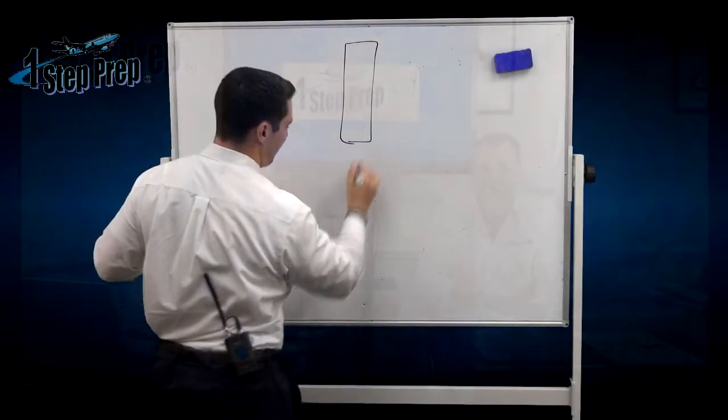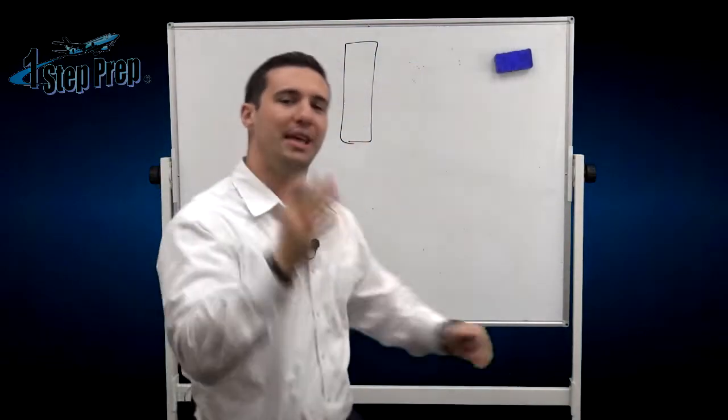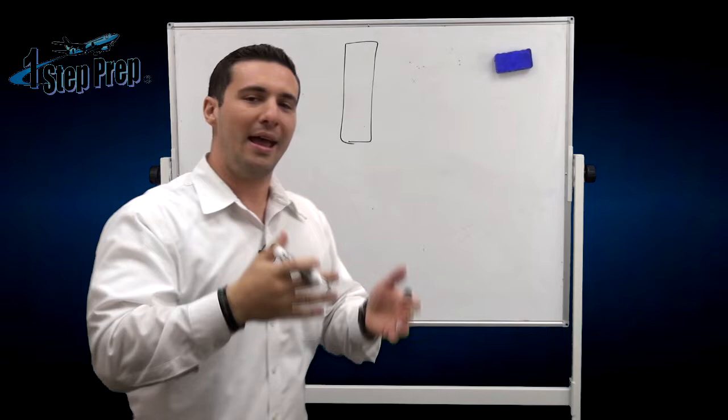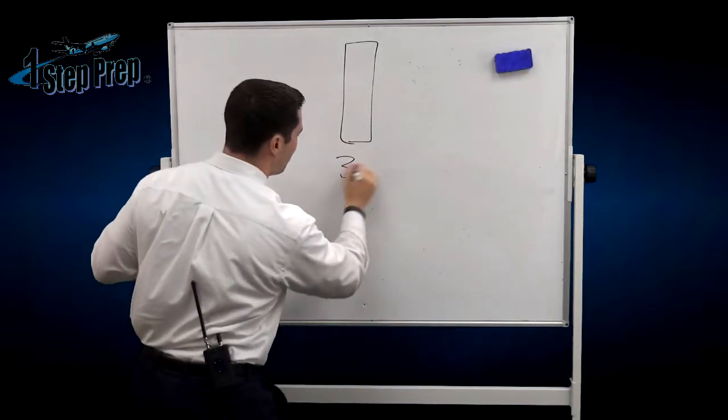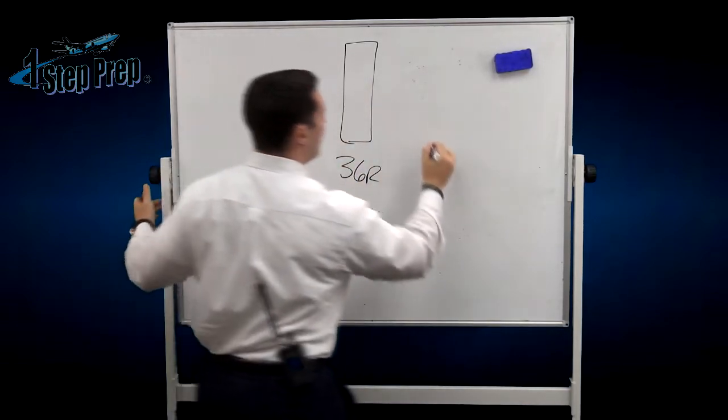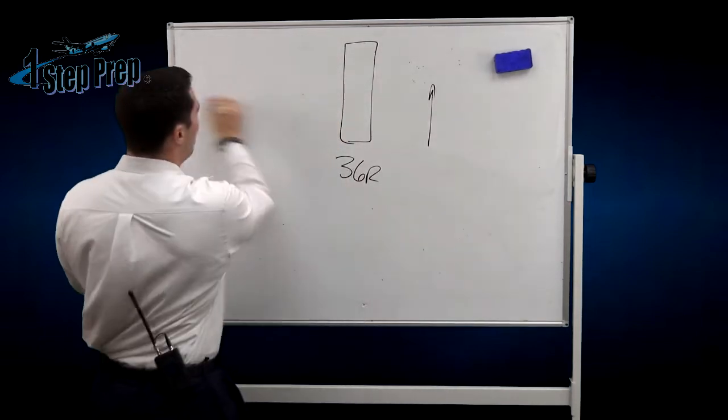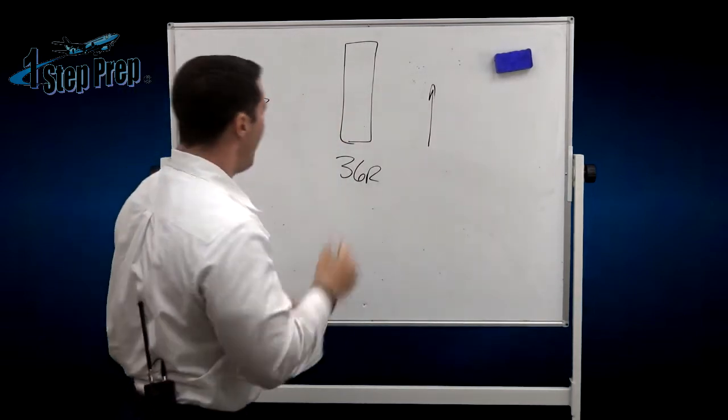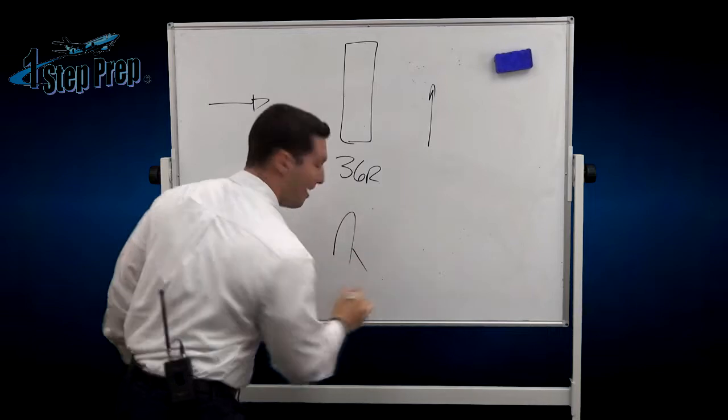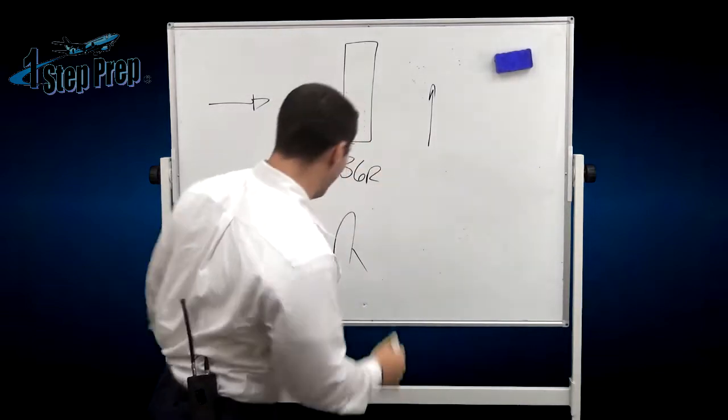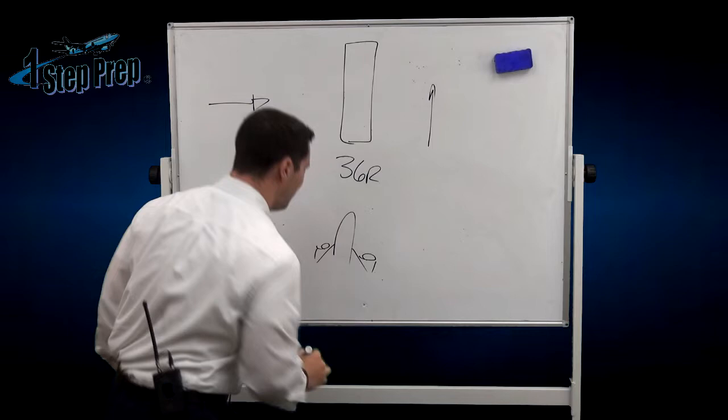Okay, so the first thing to understand for this explanation is I'm going to give us a left crosswind and we're going to land on a due north runway, runway 36. We're going to have a left crosswind coming, and the wind is 50 knots.